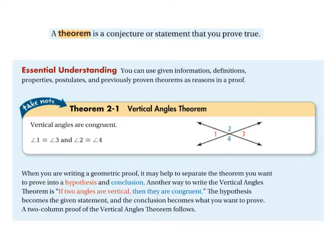In the last lesson we made a proof, which is a set of statements and the reasons why you can make those statements. A theorem is a conjecture or statement that you can actually prove is true based on given information, definitions, properties, postulates, and any previously proven theorems. Once you prove a theorem, you can use it later to prove new things.